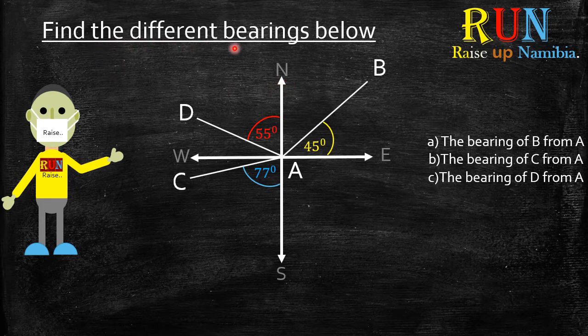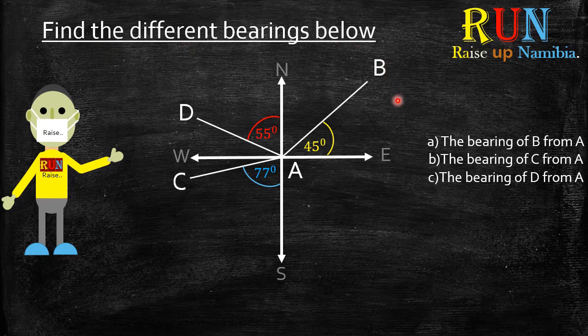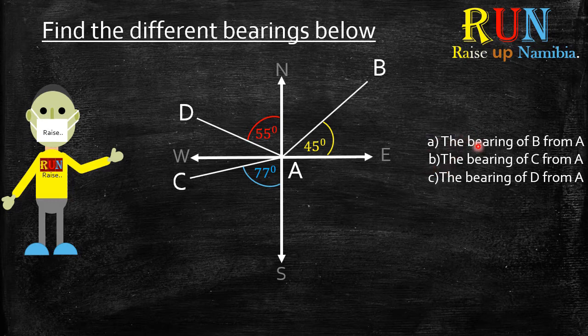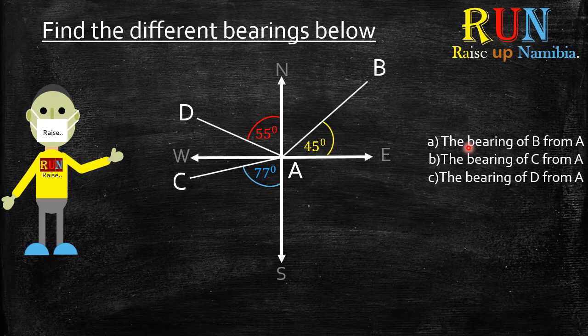So here we have find the different bearings below, which is ABC over here. Now before we attempt these examples, there's two properties which I would like to point out that will help you nail this type of questions.